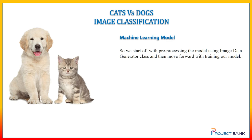For the machine learning model, we start with pre-processing the data using the ImageDataGenerator class, which is a very useful class that provides many parameters for transforming and augmenting images in different ways. Then we move forward with training our model.